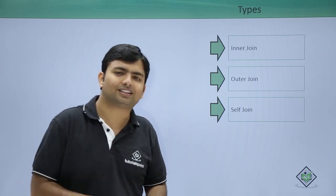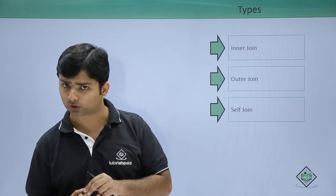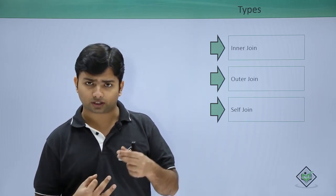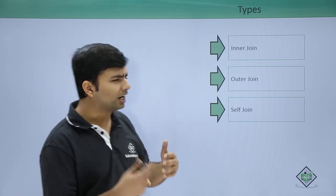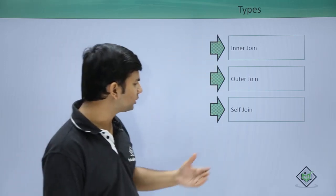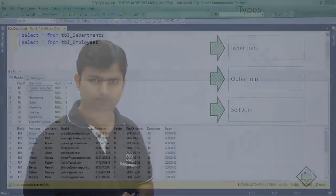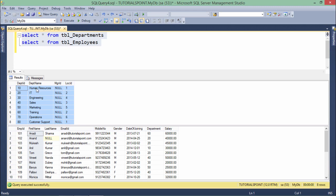The outer join itself is classified into three parts: left outer join, right outer join, and full outer join. We will discuss these three joins practically. Let's start with the inner join and outer join and then discuss self join later. Here we can see there are two tables — tbl_departments and tbl_employees — where tbl_departments contains the list of all departments and tbl_employees contains all employee records.